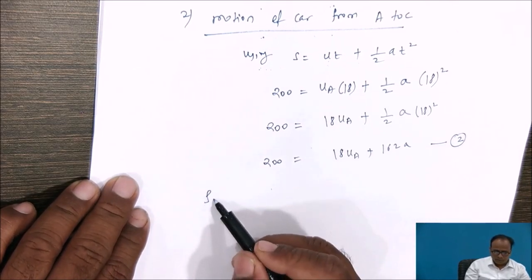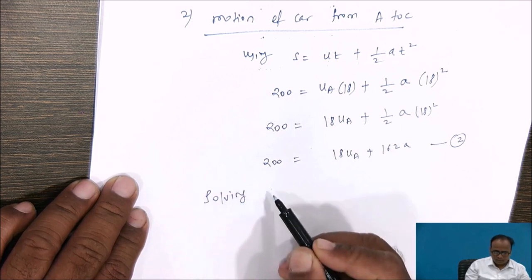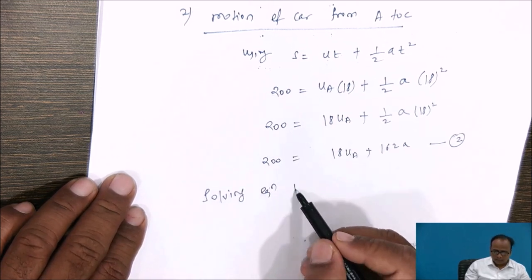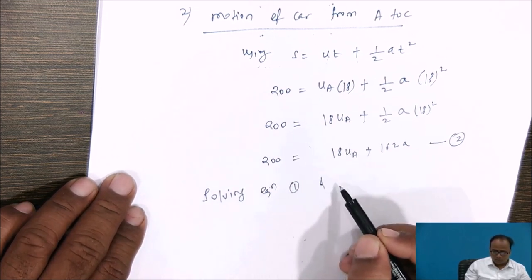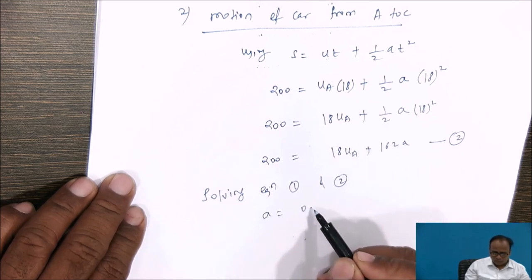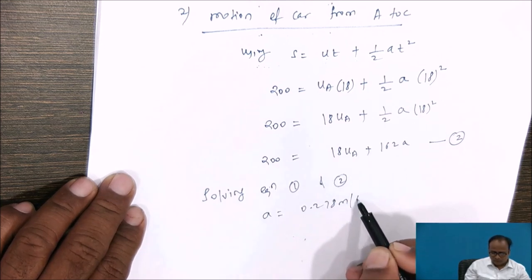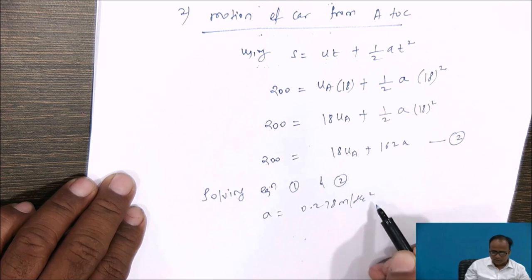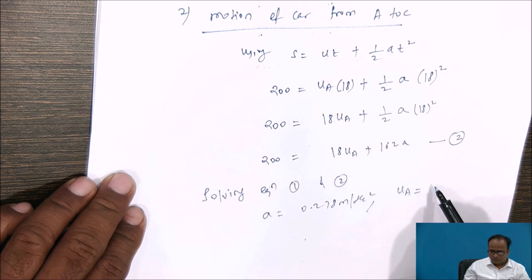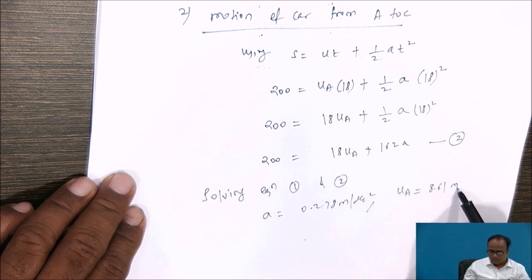Solving equations 1 and 2, we get acceleration equal to 0.278 m/s². By simplifying, the velocity of the car at A is equal to 8.61 meters per second.